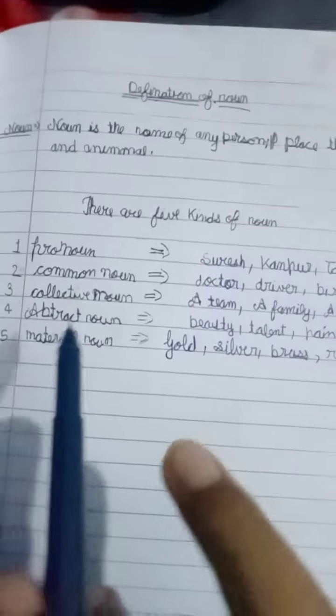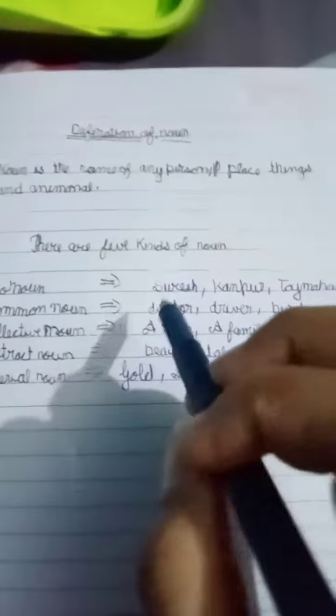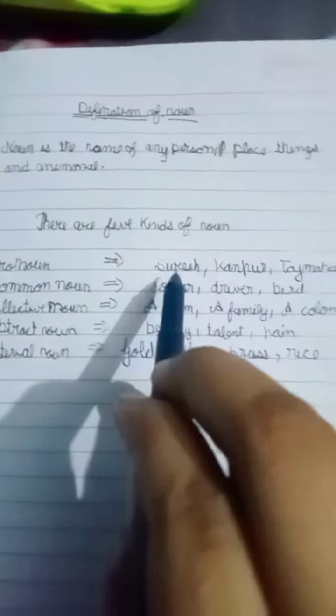So there are five kinds of noun: proper noun, common noun, collective noun, abstract noun, and material noun. This is the five kinds of noun.